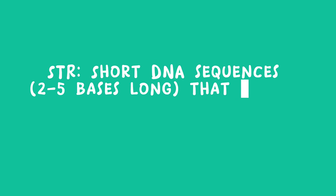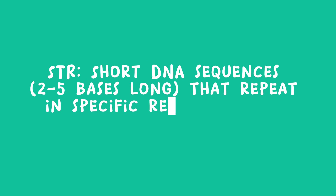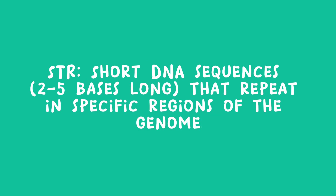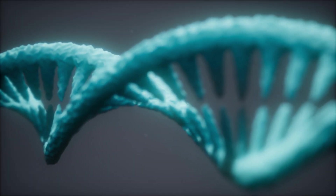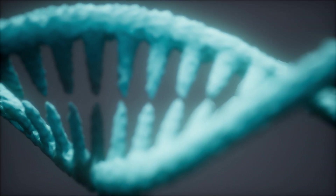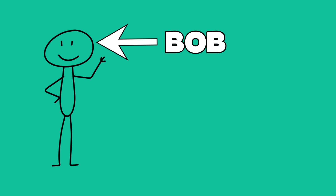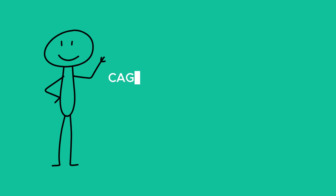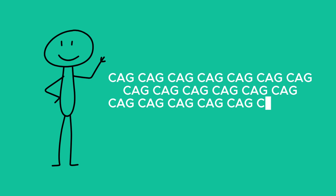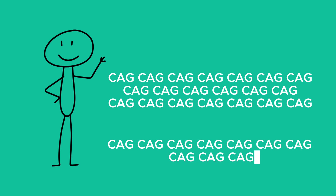STRs are short DNA sequences, usually two to five bases long, that repeat in specific regions of your genome. The number of repeats is what makes each person's genetic profile unique. For example, at one STR locus, Bob might have the sequence CAG repeated 20 times on one chromosome and 10 times on the other — this genotype is said to be 20-10.